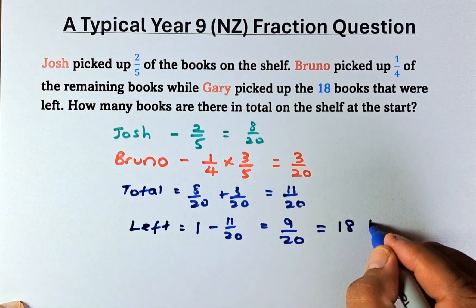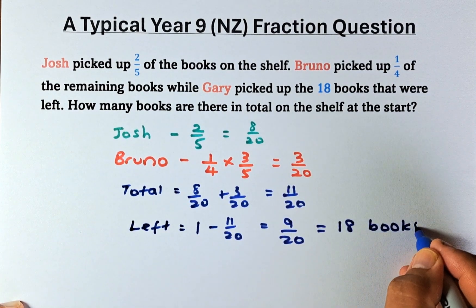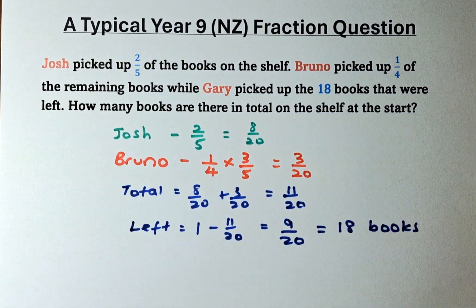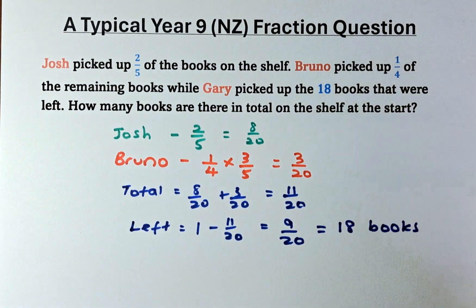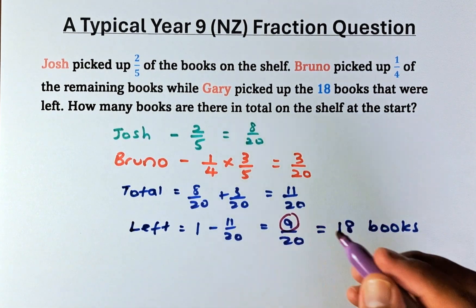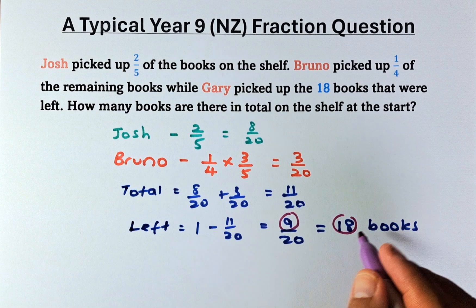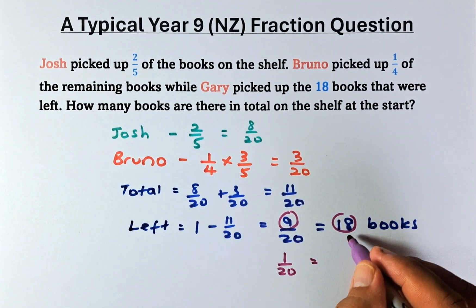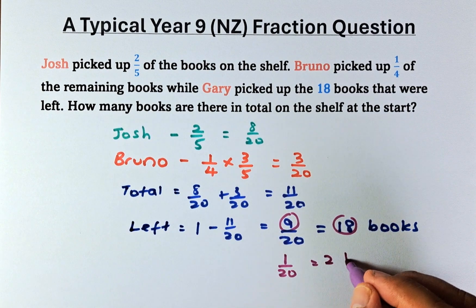So nine over twenty is equivalent to eighteen books. So now we are going to solve this equation. Nine over twenty is equal to eighteen books. So in other words, nine parts is equal to eighteen. So one over twenty is going to be eighteen divided by nine. That will be two books.